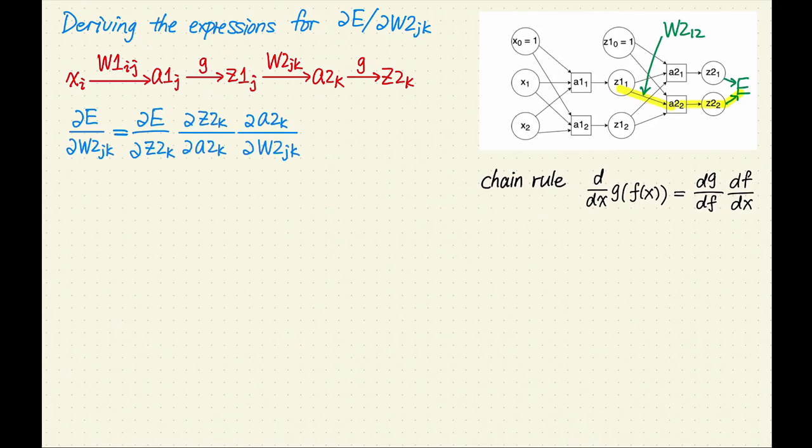We are ready to derive our first gradient expression, the partial derivative of E with respect to W2 sub jk. Our expression is basically tracing through the highlighted path from right to left. First, E is a function of z2 and y, therefore we have partial E over partial z2 sub k.